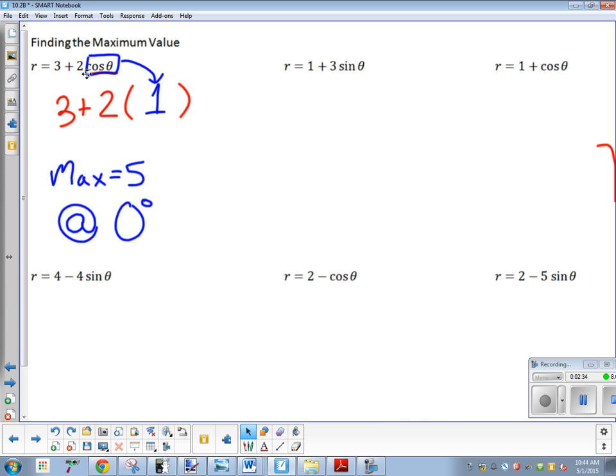Let's go to the next one. r equals one plus three sine theta. So I'm trying to figure out what can I plug in for sine theta that makes this number the biggest? Remember, it goes from one to negative one. What number will make it the biggest? One. One plus three times one. So my maximum value here is going to be four. That's as big as it can get.